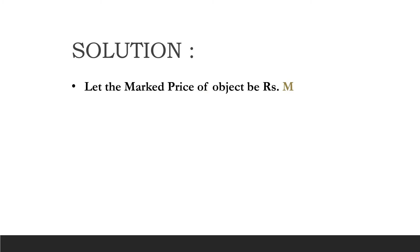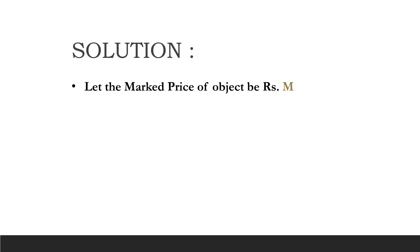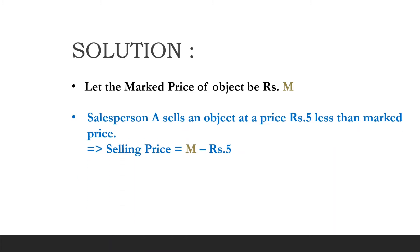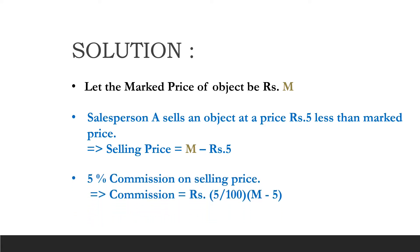Solution. Let the marked price of the object be Rs M. Firstly, let us consider the case of Salesperson A. It is given that Salesperson A sells an object at a price Rs 5 less than the marked price. That is, selling price is equal to M minus 5. It is also given that he receives 5% commission on the selling price. Therefore, commission is equal to 5% of (M minus 5).